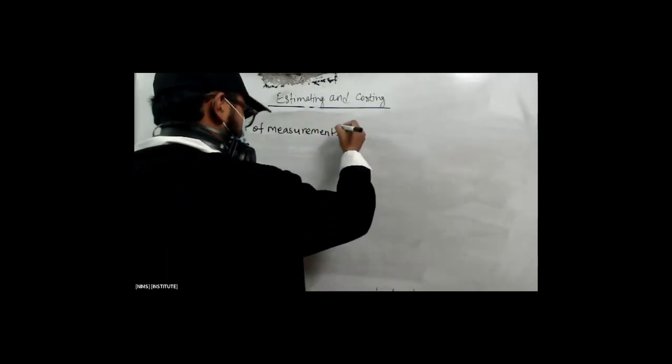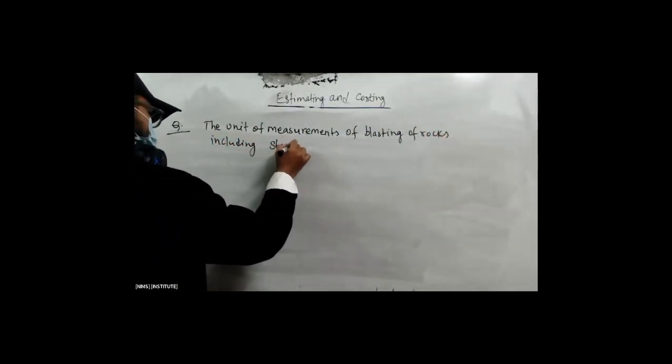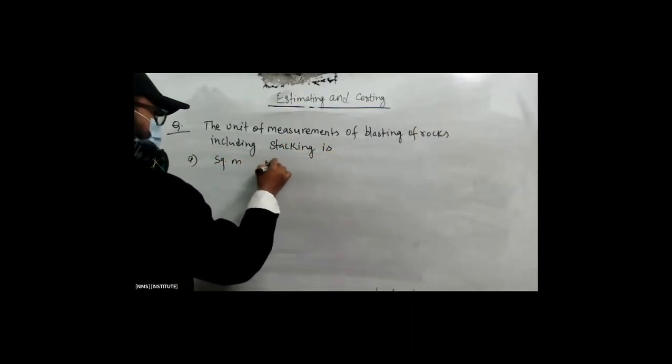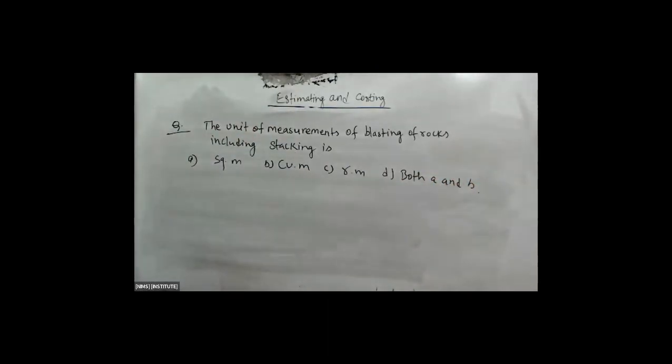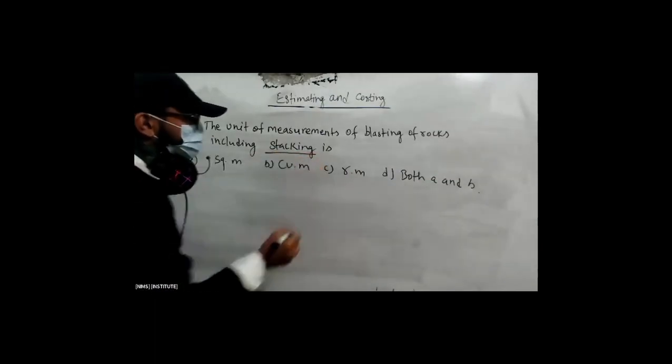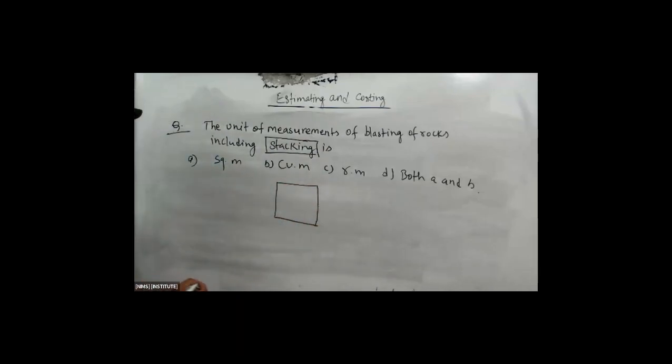The unit of measurement of blasting of rock, including stacking, is: Option A — square meter, Option B — cubic meter, Option C — running meter, and Option D — both A and B. Is stacking B? The unit of measurement of blasting of rock — the answer is cubic meter. Just length, breadth, and height specified — cubic meter.